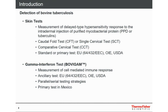First of all, I want to give you a short introduction about the different possibilities to detect bovine tuberculosis. You have the different skin tests — a measurement of delayed-type hypersensitivity response to the intradermal injection of purified mycobacterial protein. This is either PPDs or tuberculins. Then you have the CFD test, the SCC test, and also the tests that Margaret spoke about before.